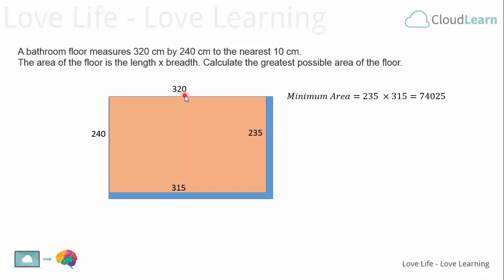So what does that give us? Well, the minimum area will therefore be 235 times 315, which would give us 74,025 centimeters squared.